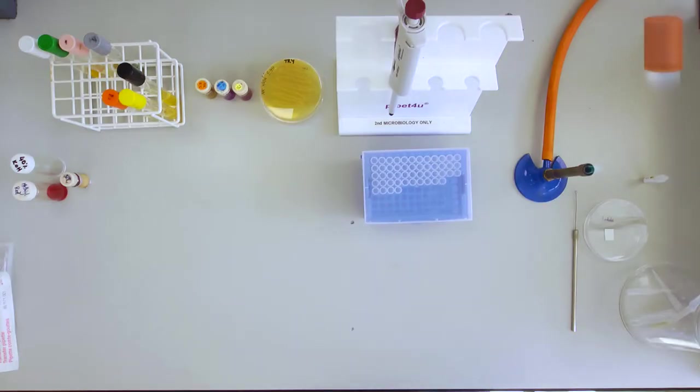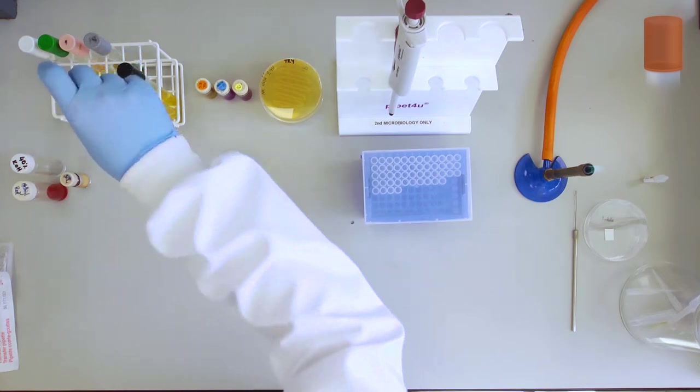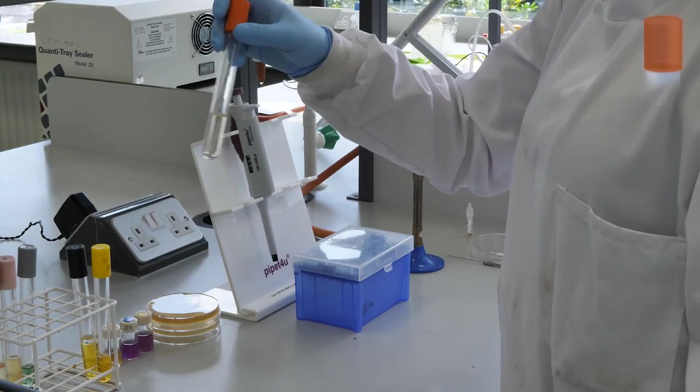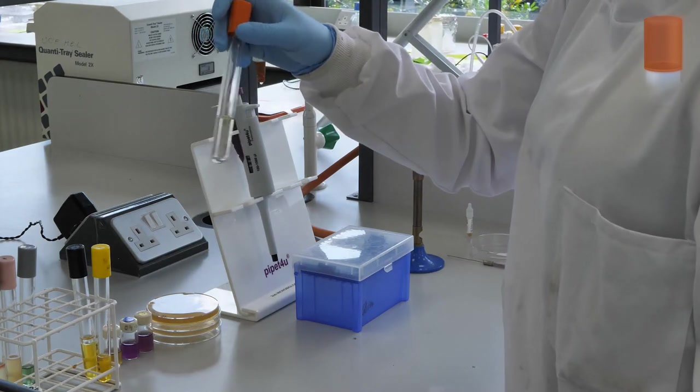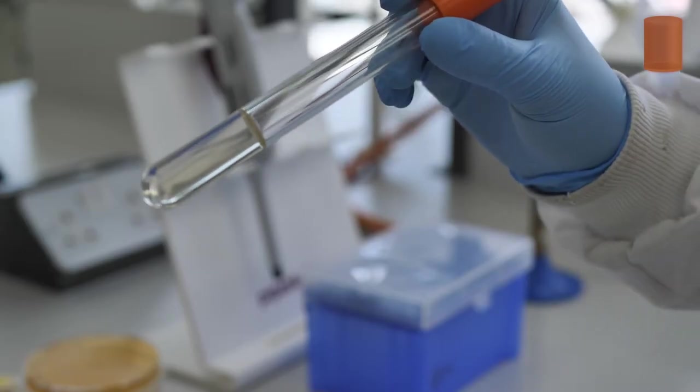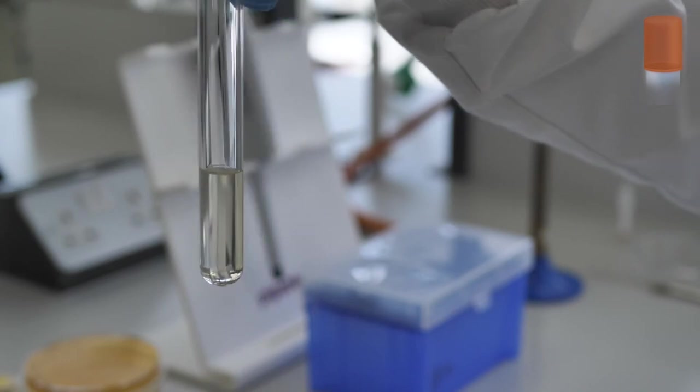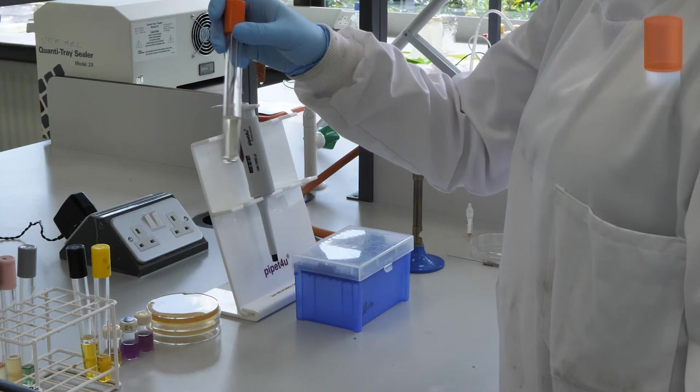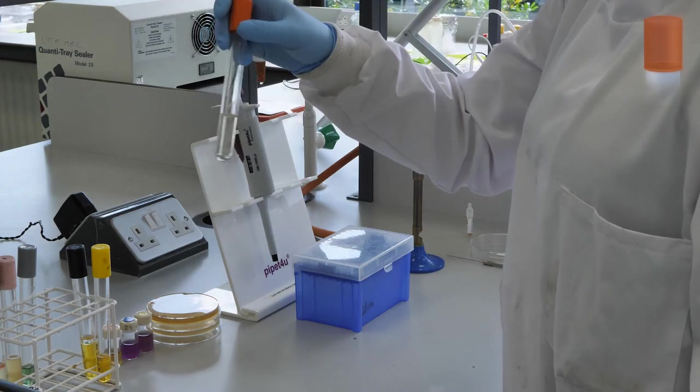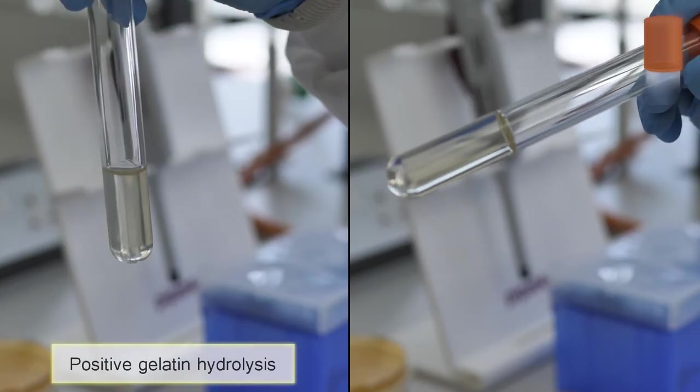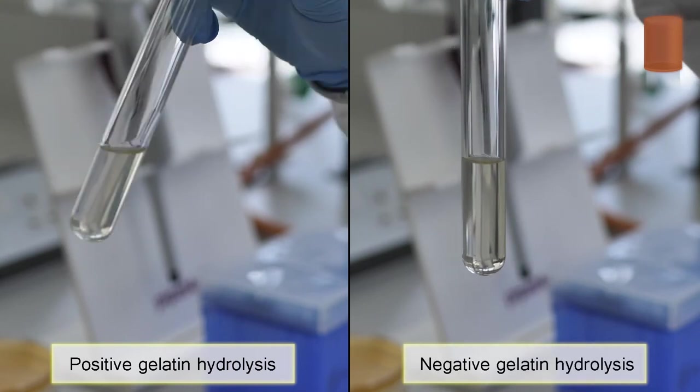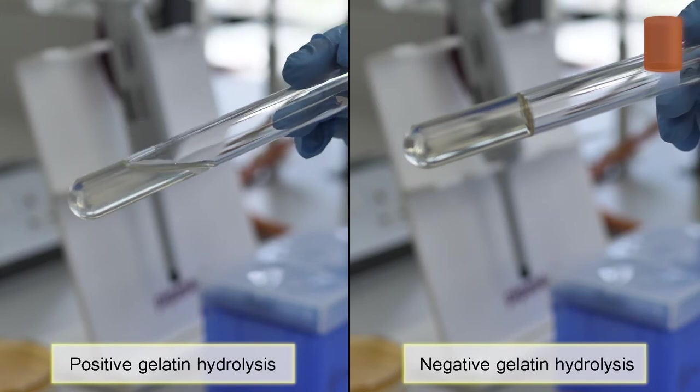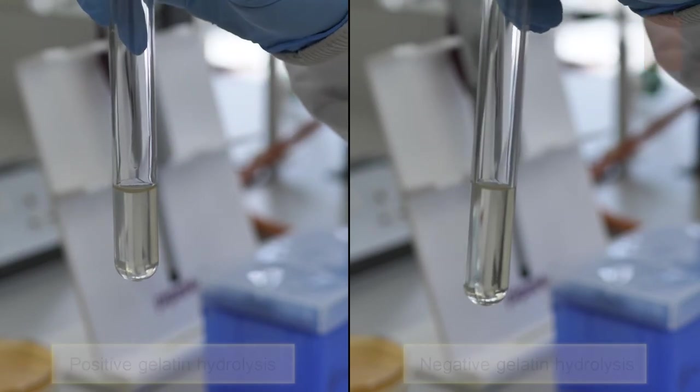The gelatine hydrolysis test determines whether a bacterial species can break down gelatine. This result is visual only. If the media is solid following incubation then the bacteria is negative for gelatine breakdown. If the media is partially or totally liquid following incubation run the tube under a cold tap. If the media remains liquid then the bacteria is positive for gelatine breakdown.